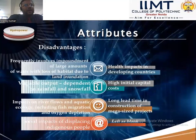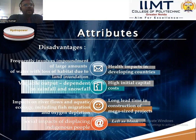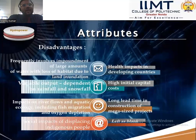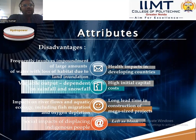Disadvantages of hydropower plants: frequently involve impoundment of large amounts of water with loss of habitat due to land flooding; health impacts in developing countries; output dependent on rainfall and snowfall; high initial capital cost; improper river flow; impacts on aquatic ecology including fish migration and oxygen levels; long construction time for mega-sized projects; social impacts of displacing people.